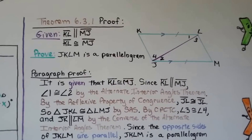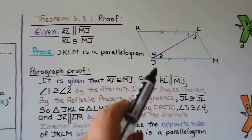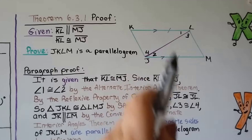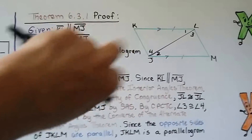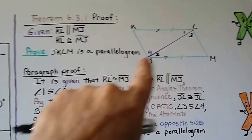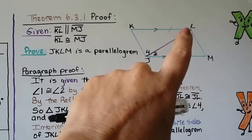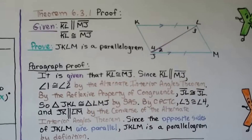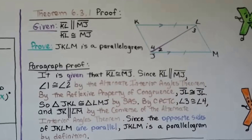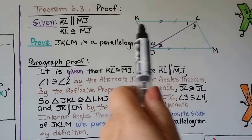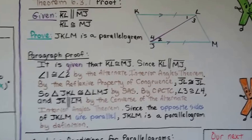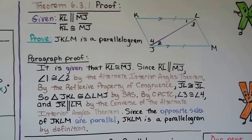Here's a proof for theorem 6.3.1. We have two congruent lines that are also parallel, and a diagonal with angles 1, 3, 4, and 2. It is given that KL is parallel to MJ and KL is congruent to MJ — we can see the parallel and congruent marks. We need to prove that JKLM is a parallelogram, so here's a paragraph proof.